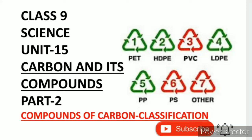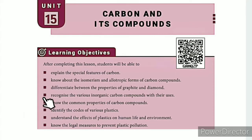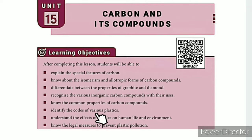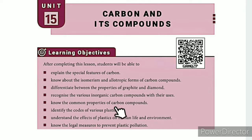Greetings from SS Class 9 Science Unit 15, Carbon and Its Compounds Part 2: Compounds of Carbon Classification. The learning objectives are: explain the special features of carbon; know about isomerism and allotropic forms of carbon compounds; differentiate between the properties of graphite and diamond; recognize the various inorganic carbon compounds with their uses; know the common properties of carbon compounds; identify the codes of various plastics; understand the effects of plastics on human life and environment; know the legal measures to prevent plastic pollution.